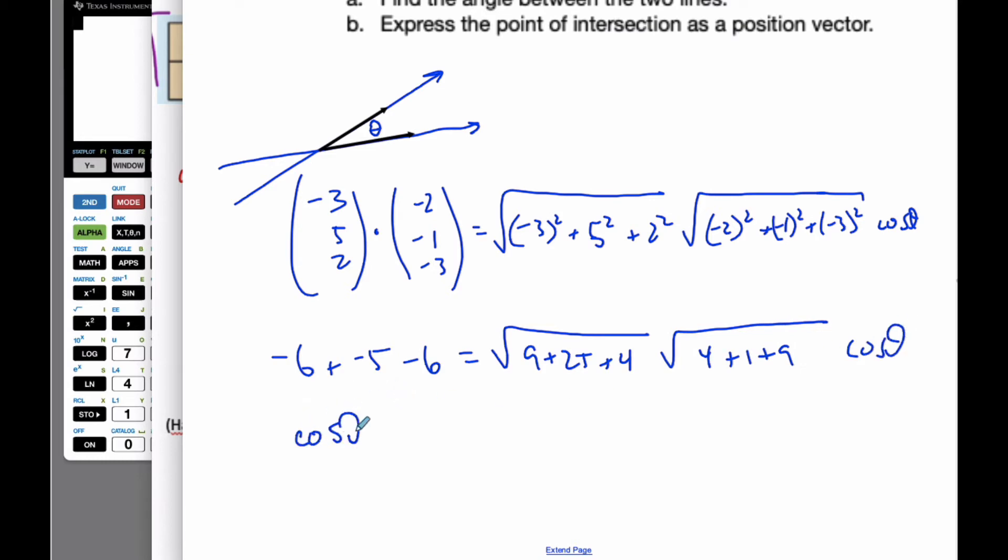So cosine of theta will be, well, negative 12 will be negative 17, over the square root of, square root of 34, times the square root of 14.